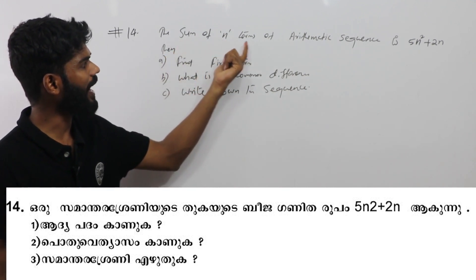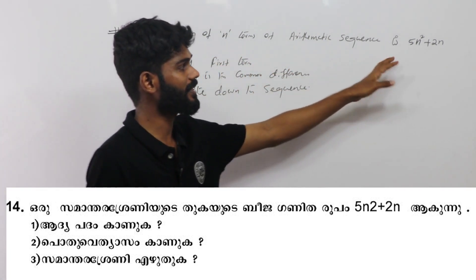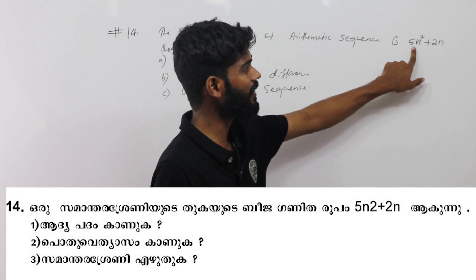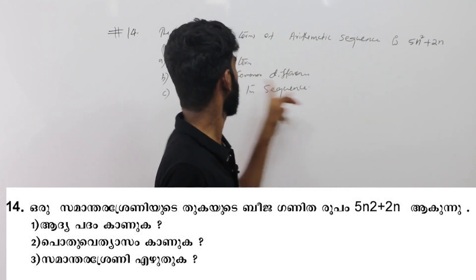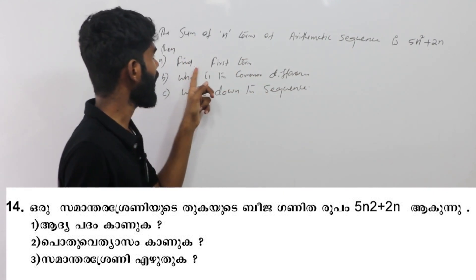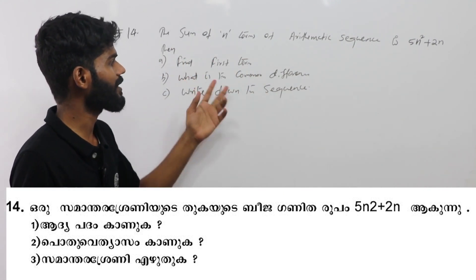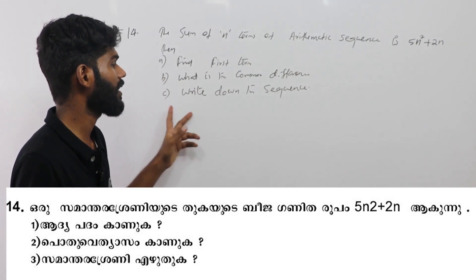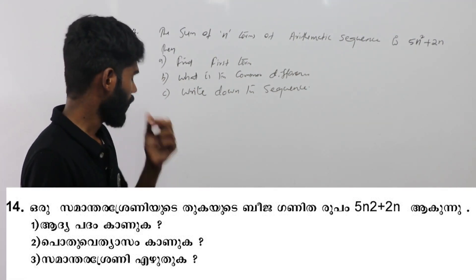The sum of n terms of an arithmetic sequence is 5 into n squared plus 2n. Find the first term. Second question: what is the common difference? Third question: write down the sequence.